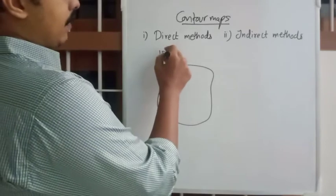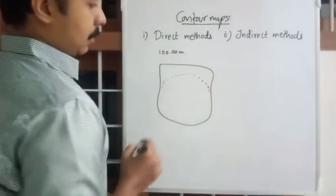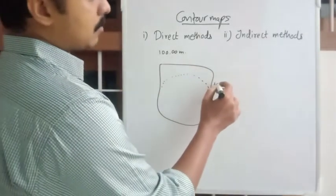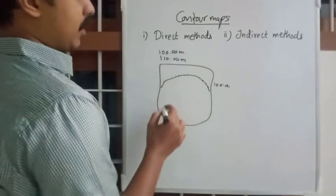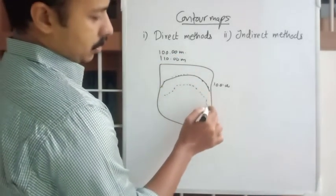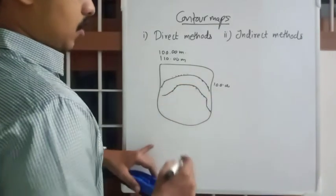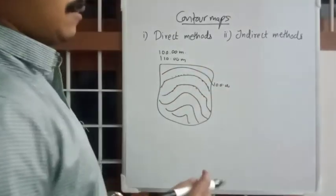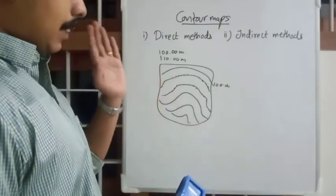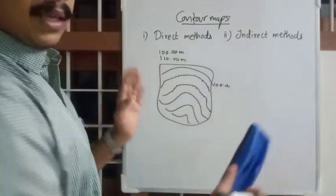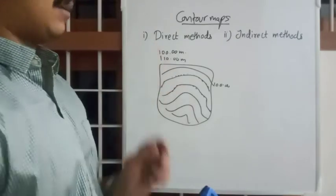In the direct method, we fix on an elevation, suppose 100 meters. We find every point which is having 100 meters height and connect it with a line. Then we fix on another elevation, find all the points which are having 110 meter elevation using the level, and connect these points. It is a very tedious process. You have to find out each and every point in this plot, and if the plot gets bigger, the work will be longer — a two or three acre plot may take many days.